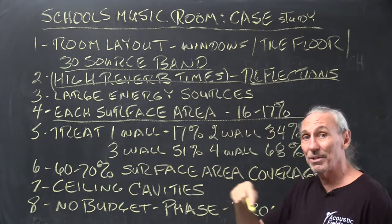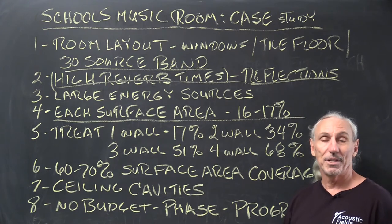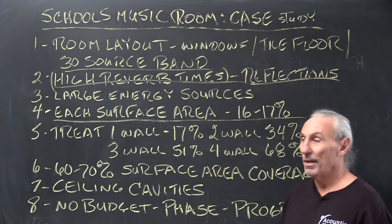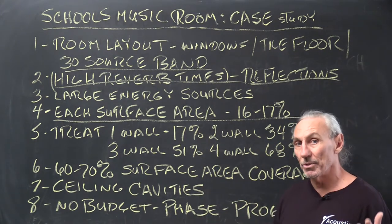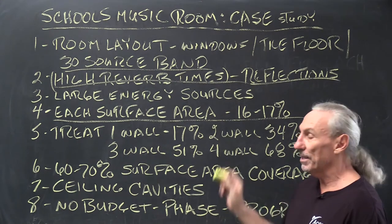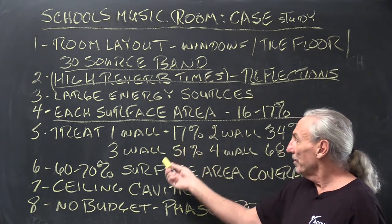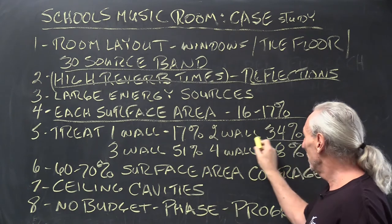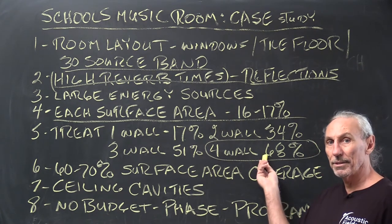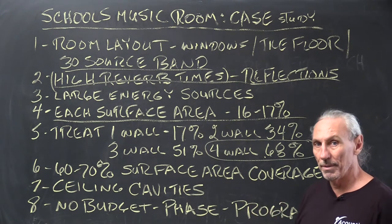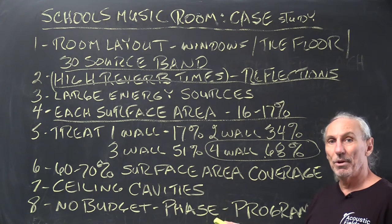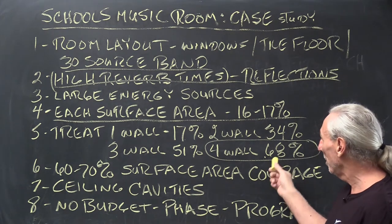We have lots of energy sources, and we have to realize that each surface area we treat only contributes 16 to 17 percent of the problem, because we have six surface areas — four walls, floor, and ceiling. Divide 100 by 6 and you get around 17 percent per surface. Psychoacoustically, certain surfaces have a larger impact on intelligibility and definition, but keeping it basic: treat one wall — 17%; two walls — 34%; three walls — 50%. That's the magic number.